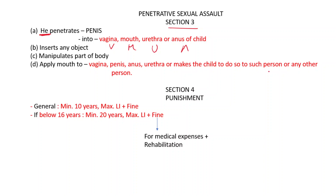And makes the child do so to such person or any other person. So what are the four elements? First, penetration involving vagina, mouth, urethra, and anus. Second, object insertion. Third, body manipulation. Fourth, mouth applied on all these parts.